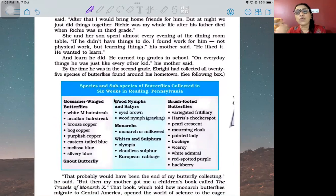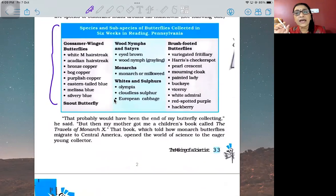She and her son spent almost every evening at the dining room table. If he didn't have things to do, she found work for him - not physical but learning. He liked it. He wanted to learn, and learn he did. He earned top grades in school. On everyday things he was just like every other kid - naughty and all. By the time he was in second grade, Ebright had collected all 25 species of butterflies found around his hometown. That probably would have been the end of his butterfly collecting, but then his mother got him a children's book called 'The Travels of Monarch X'.